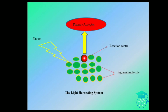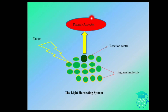The antenna molecules absorb light of a particular wavelength and transfer the energy to the reaction center, which contains chlorophyll a, causing the electrons to get excited. These excited electrons are picked up by the primary acceptor. This is the overall concept of the light-harvesting system.